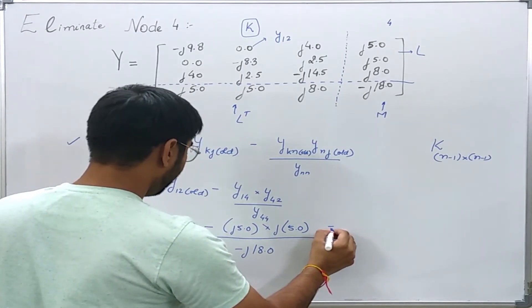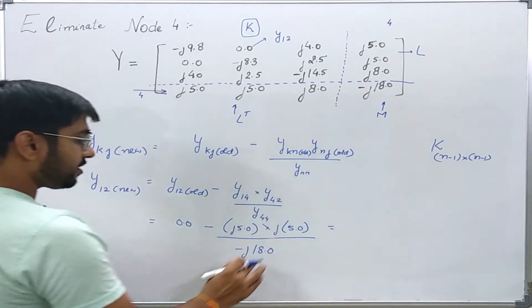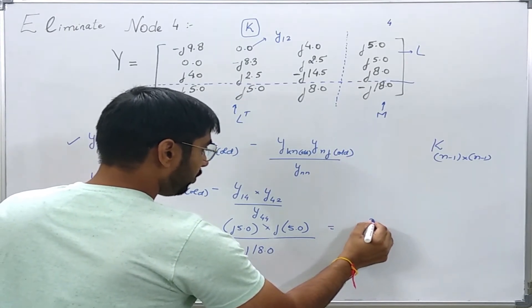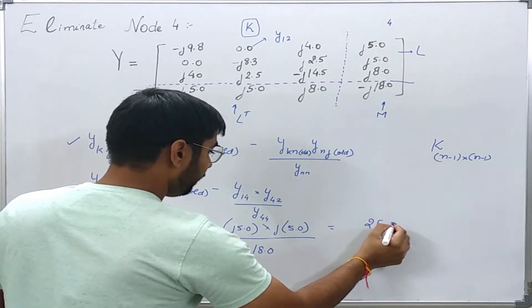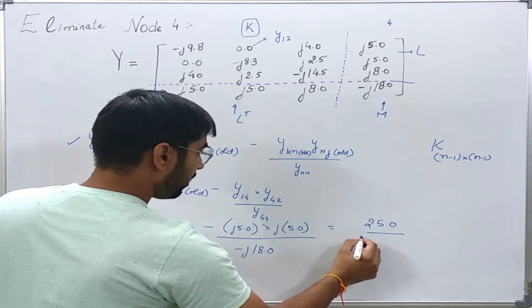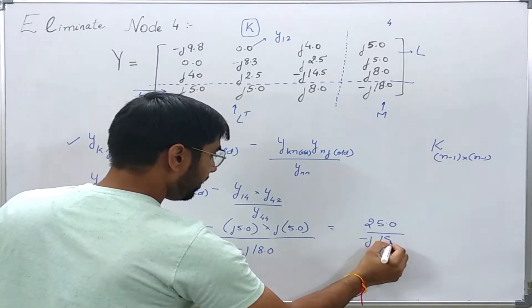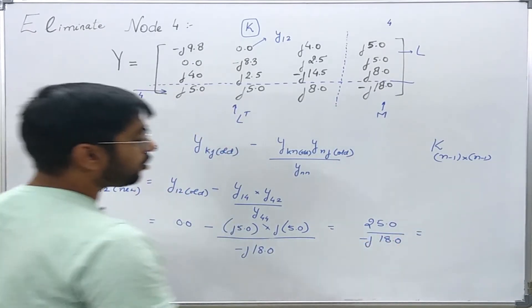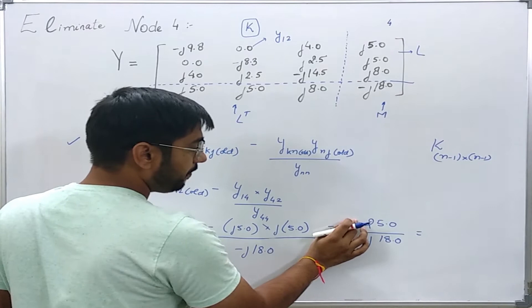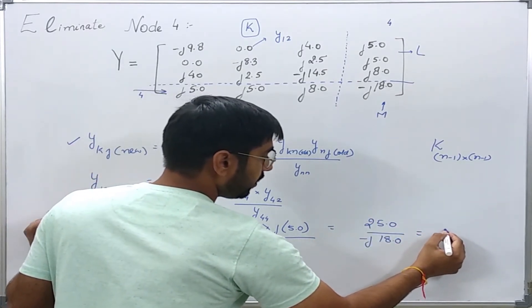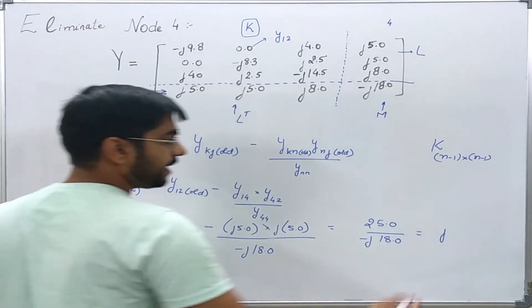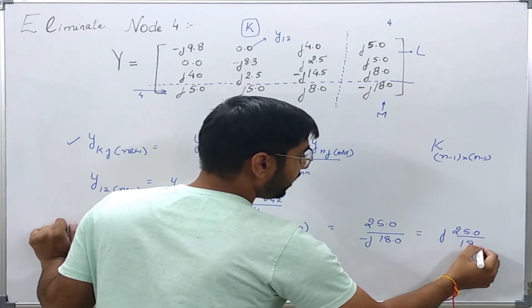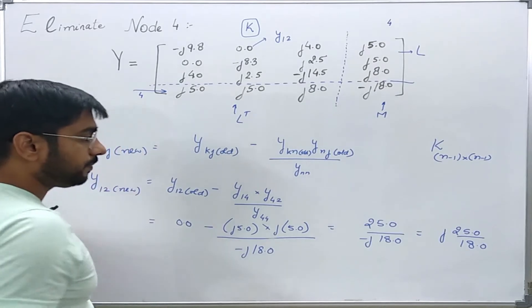And this element is nothing but minus j18.0. So it will give me j squared which is nothing but minus 1. Let me assume it will be 25.0 divided by minus j18.0, or this will come out to be j 25.0 divided by 18.0.